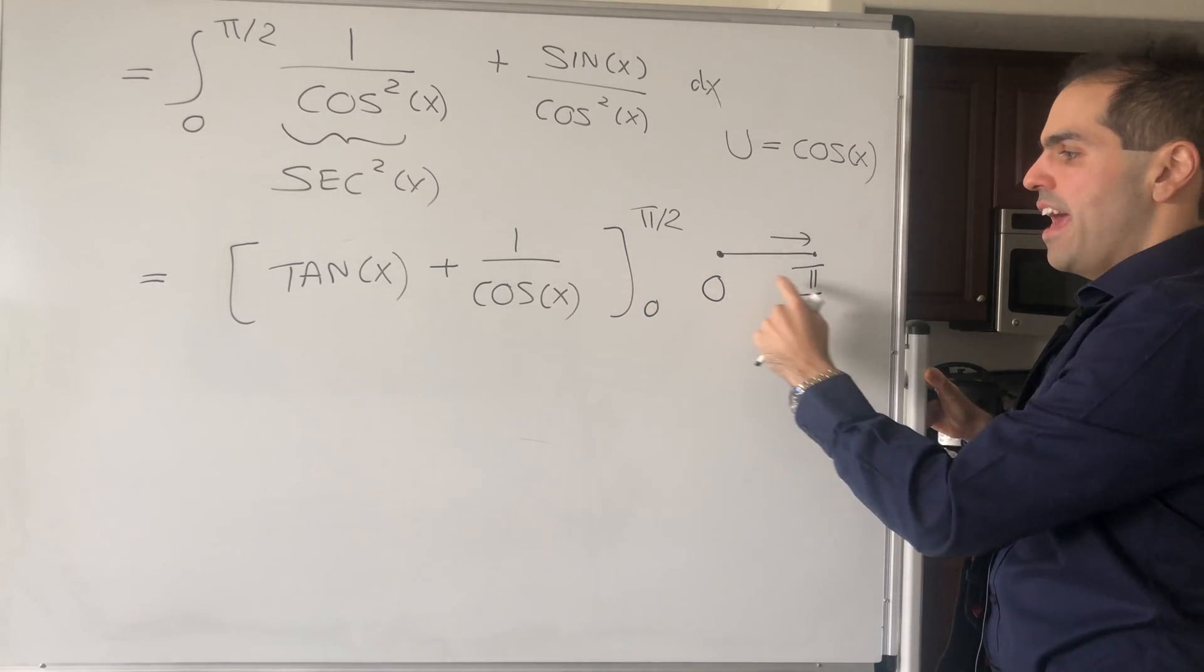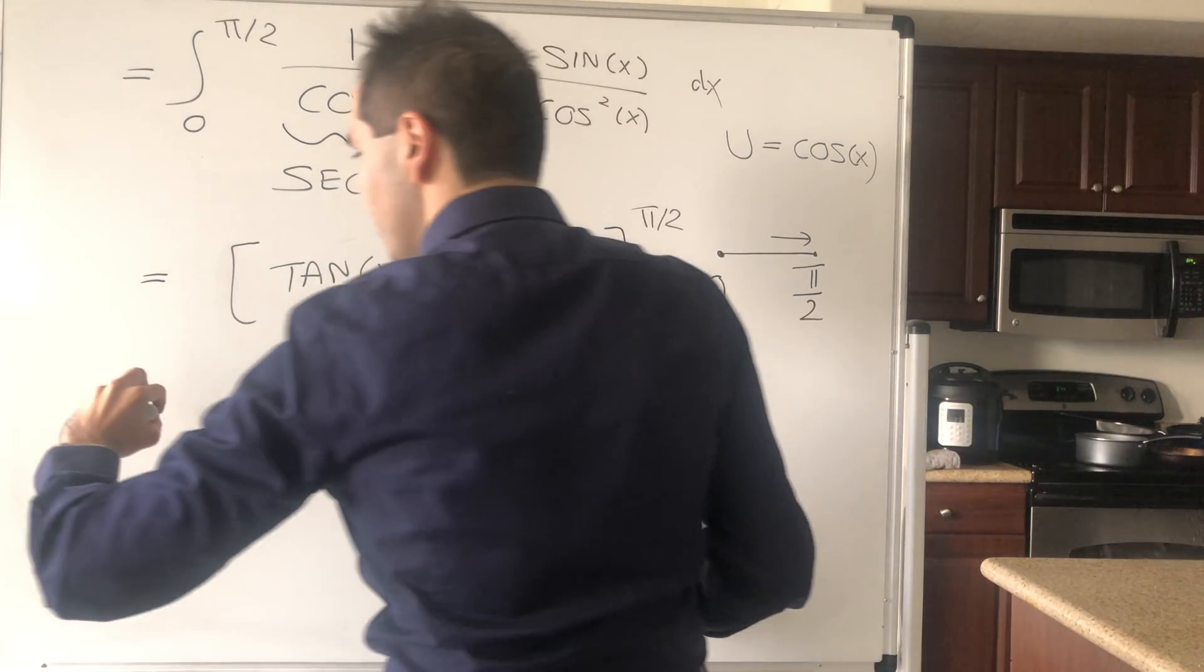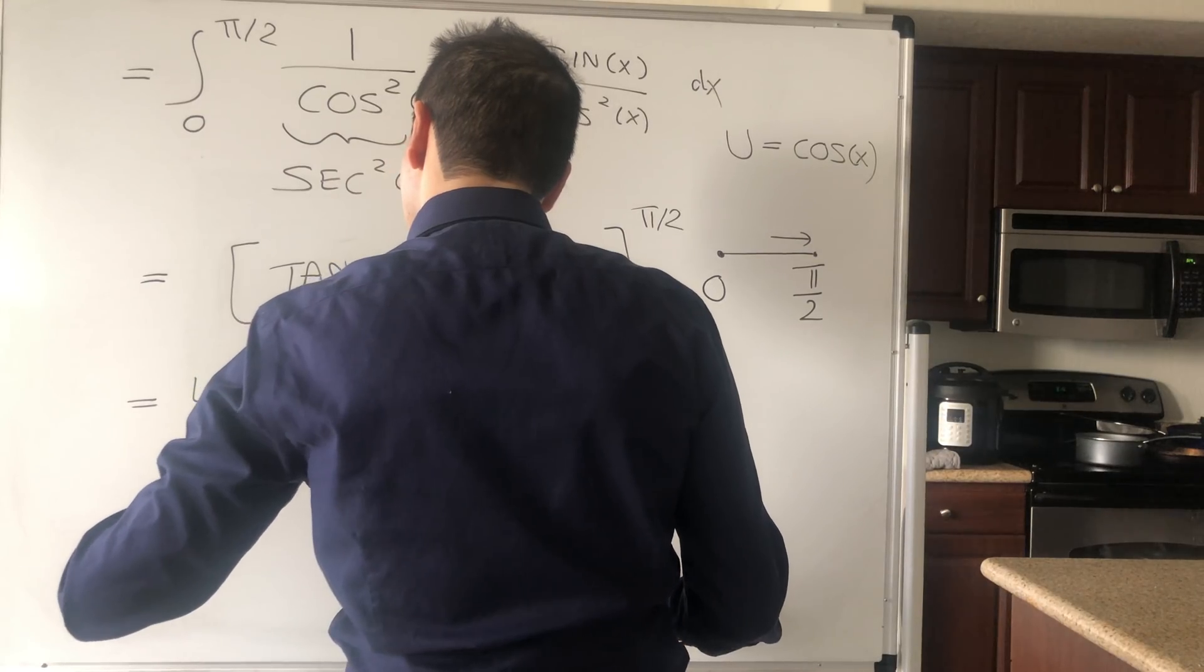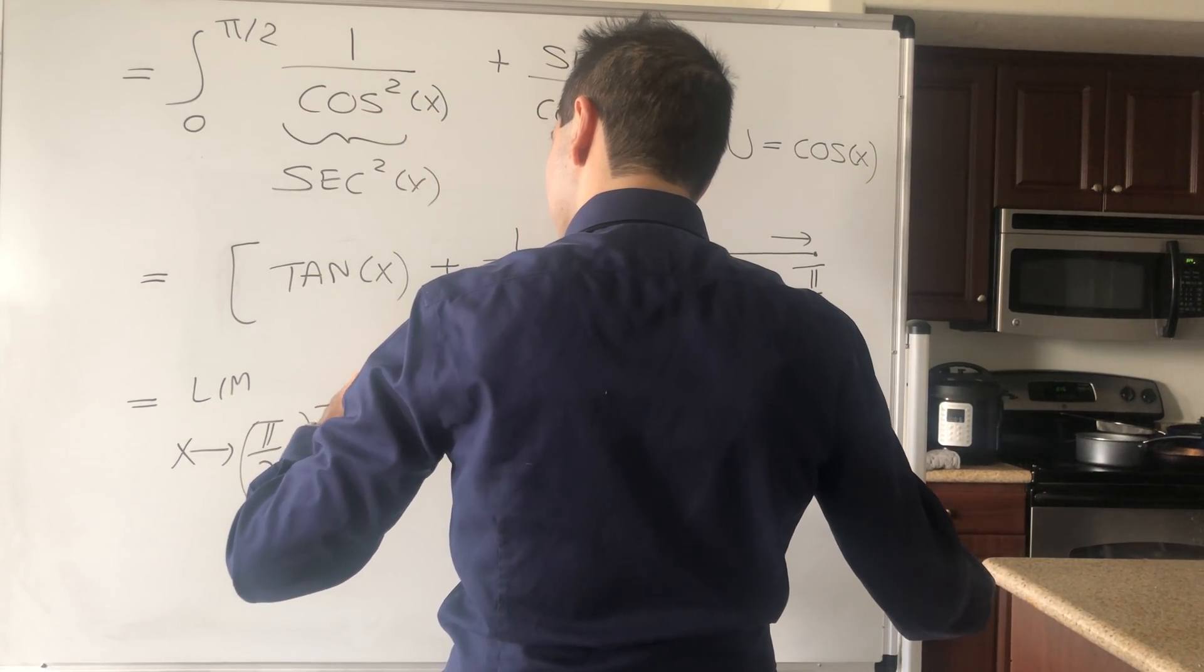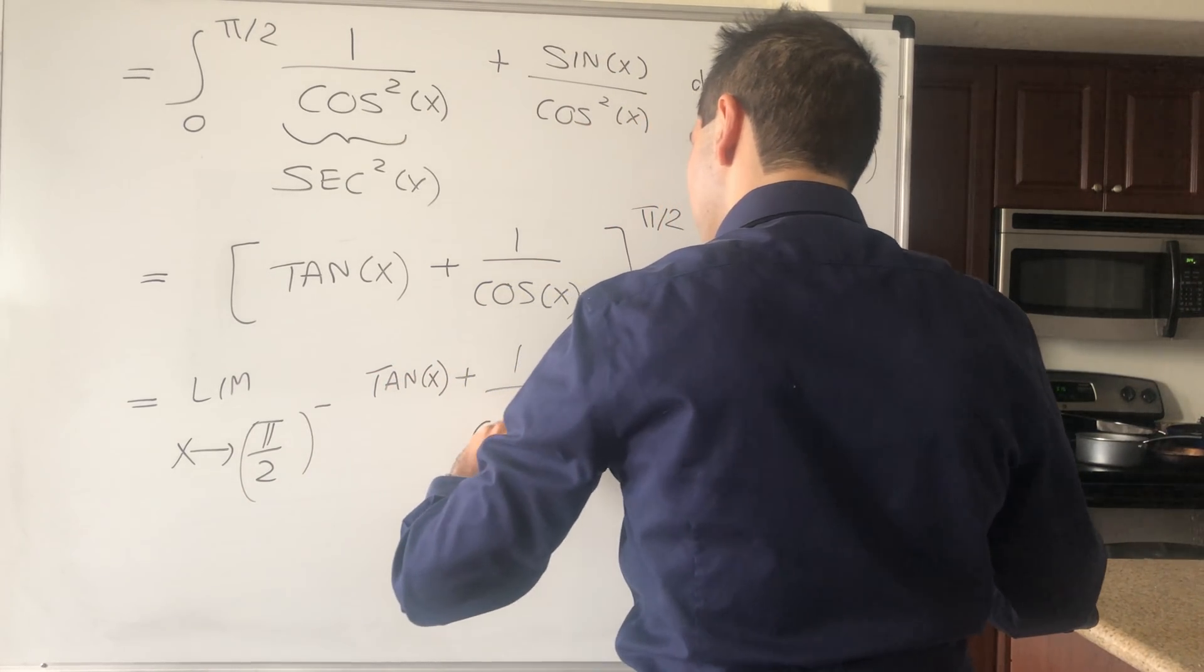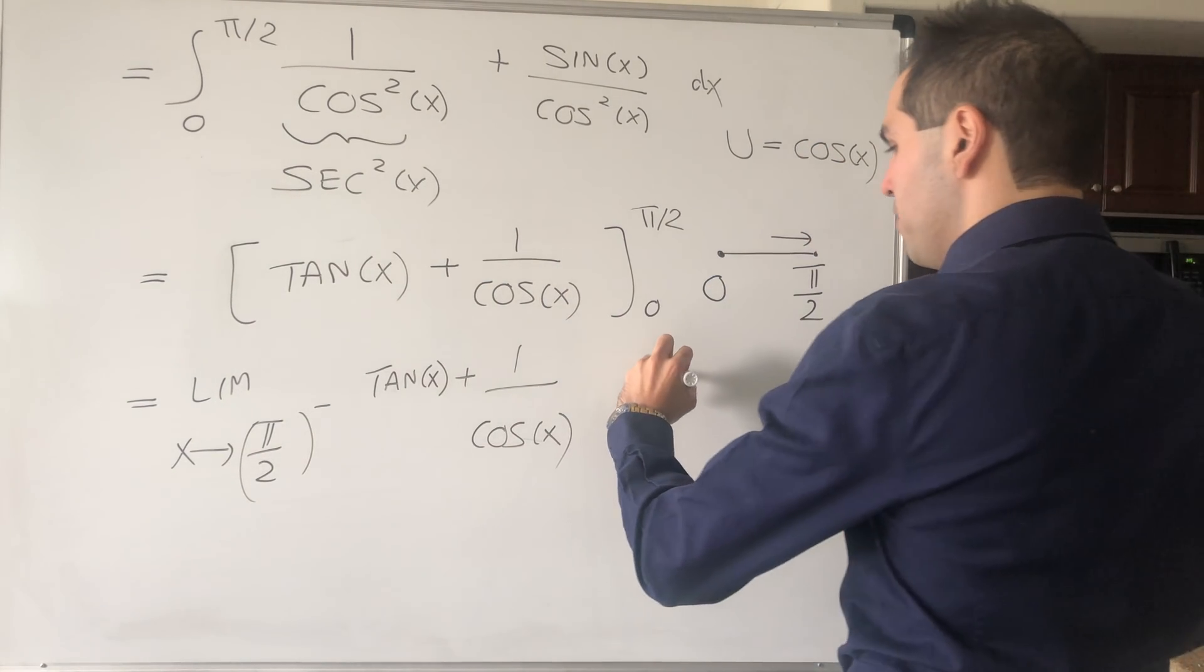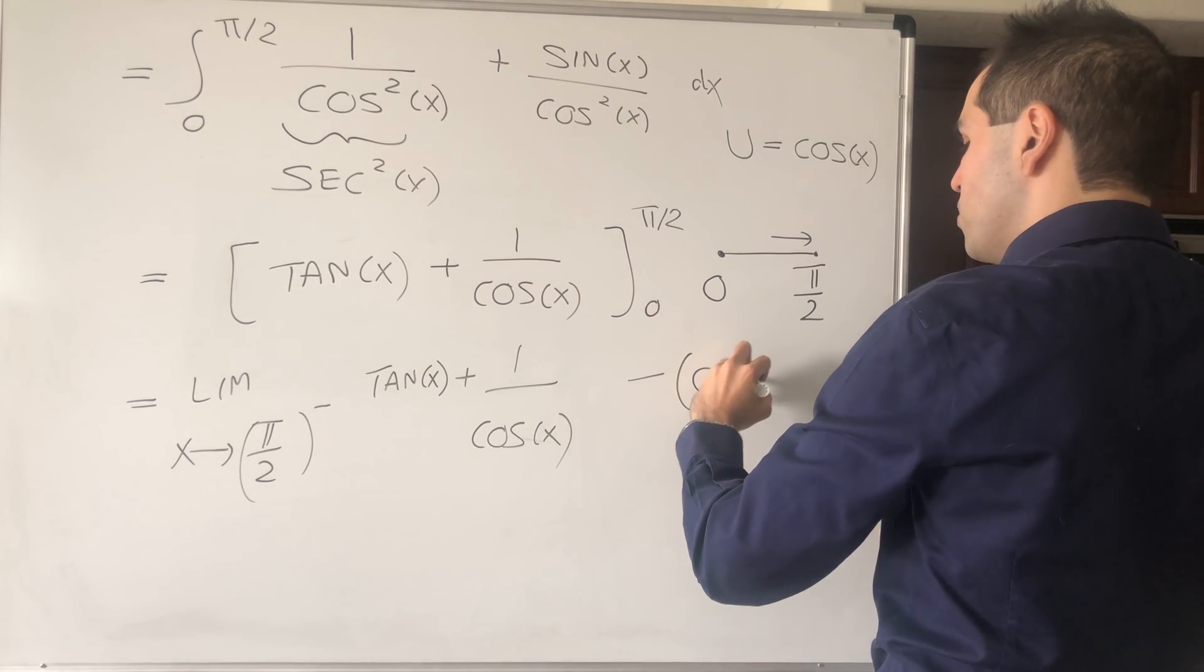To evaluate this antiderivative, it is the limit as x goes to π/2⁻ of tan(x) + 1/cos(x). At zero it's not a big problem—tan(0) is 0 and 1/cos(0) is 1, so in the end subtract by 1.